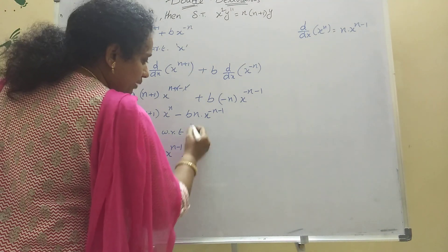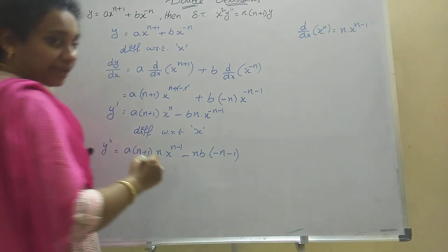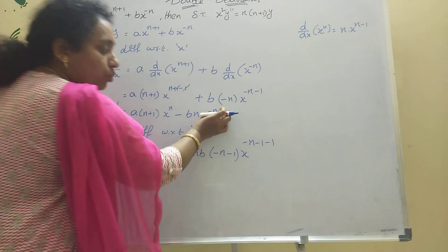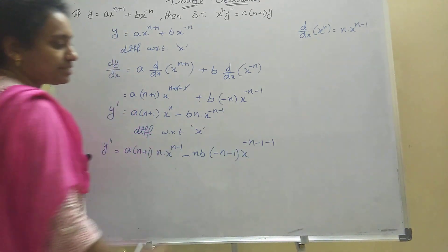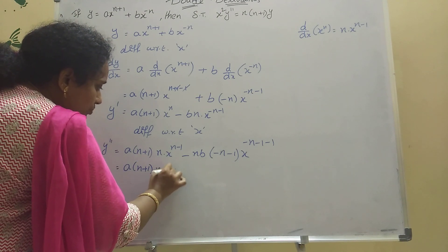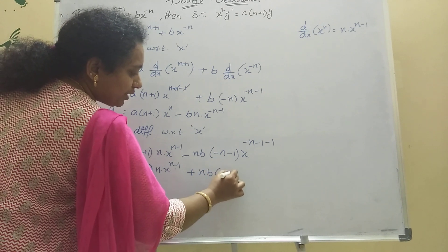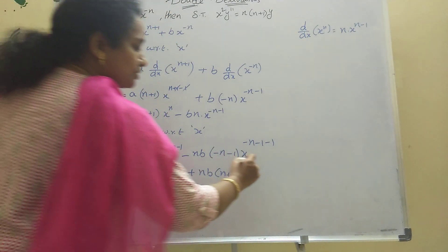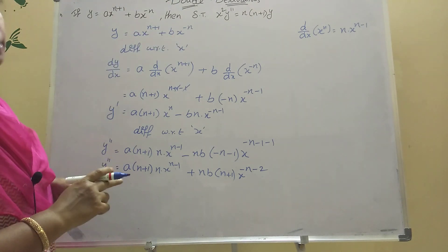For the second term, b·n is constant and we differentiate x^(-n-1). Using the formula, the power is (−n−1), so the derivative gives (−n−1)·x^(-n-2). Taking out the minus sign, we get: y'' = a·(n+1)·n·x^(n-1) + n·b·(n+1)·x^(-n-2).